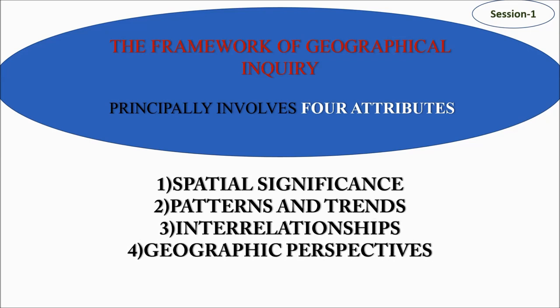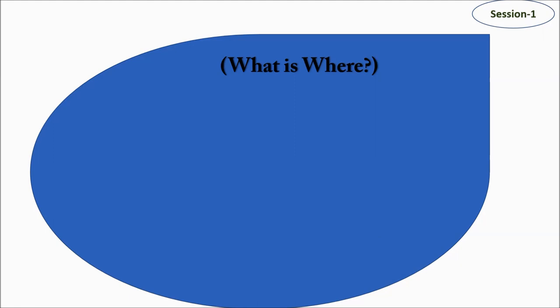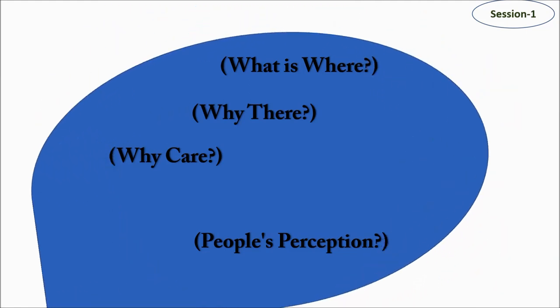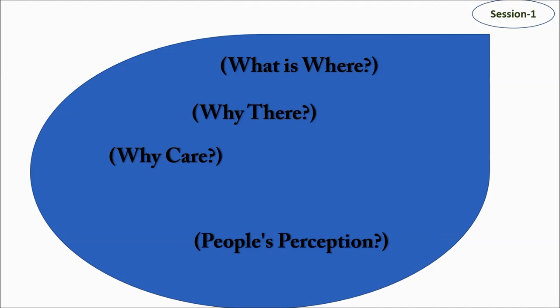We start with basic questions: what is where? Why is it there? And why do we care? These are the three basic ideas that help us understand why fieldwork is needed. When we integrate these three things with a fourth — people's perception about all three questions — then in totality we talk about the making of a fieldwork and its research methodology, how we conduct the research.